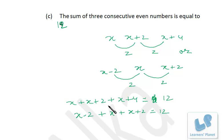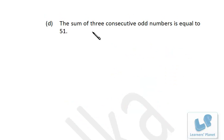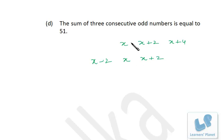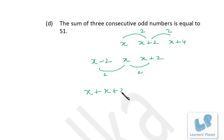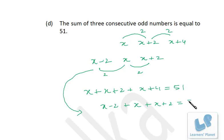Similarly, the sum of three consecutive odd numbers is equal to 51, where consecutive odd numbers also differ by 2. In the next session we will be learning to solve algebraic equations and will discuss terms, coefficients, and other terminologies related to algebraic expressions. Please revise this session and the previous one. See you in the next session — bye-bye.